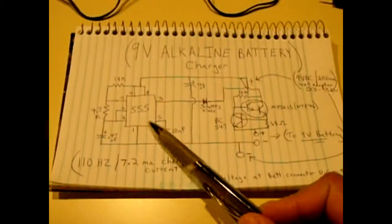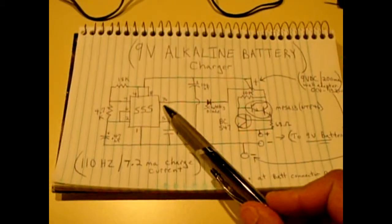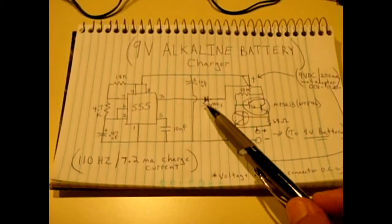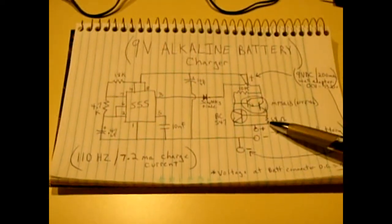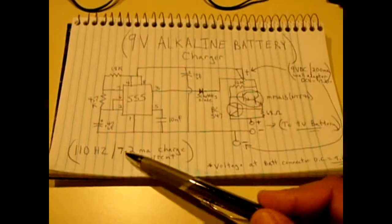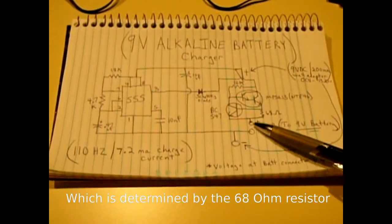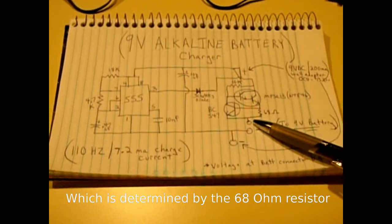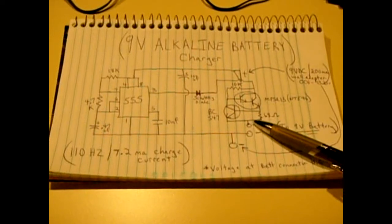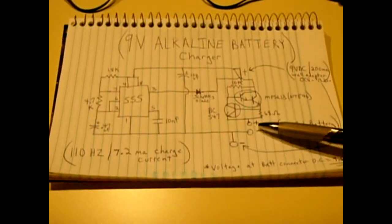We have the 555 sending out DC pulses on pin three passing through the Schottky diode into the constant current charging circuit. When the battery reaches near the fully charged voltage of 9.4 to 9.6 in that range then and only then will the constant current voltage begin to taper off.